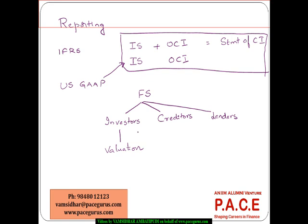Investors evaluate the profits and losses over various years to finally arrive at the valuation of the firm. From a lender's standpoint, their understanding of the income statement is to assess the company's ability to repay — ability to pay interest on time and ability to do a principal repayment whenever required. Lenders evaluate the income statement for that purpose.